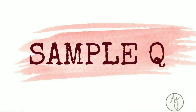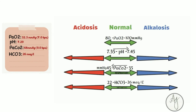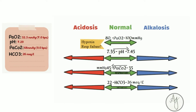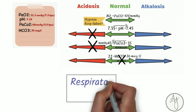Let's apply this to a sample. Starting with step one, we look at the oxygen — it is 52.5 mmHg, much less than normal, so this patient is hypoxic and in some form of respiratory failure. The pH is 7.29, which is in the acidotic range. Carbon dioxide is 68 mmHg, way too high, and bicarb is 26 mEq/L. So he's hypoxic with acidosis, and since carbon dioxide is high — more CO2, more acid — this is a case of respiratory acidosis.